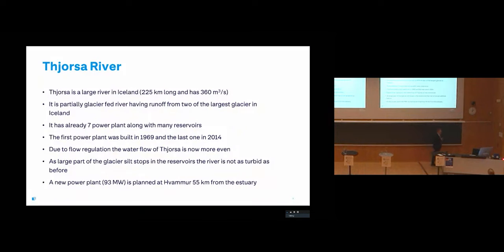River Þjórsá is the longest river in Iceland and it's a big one, 360 cubic meters per second. It's partly glacier fed and it has runoff from two of the largest glaciers in Iceland.